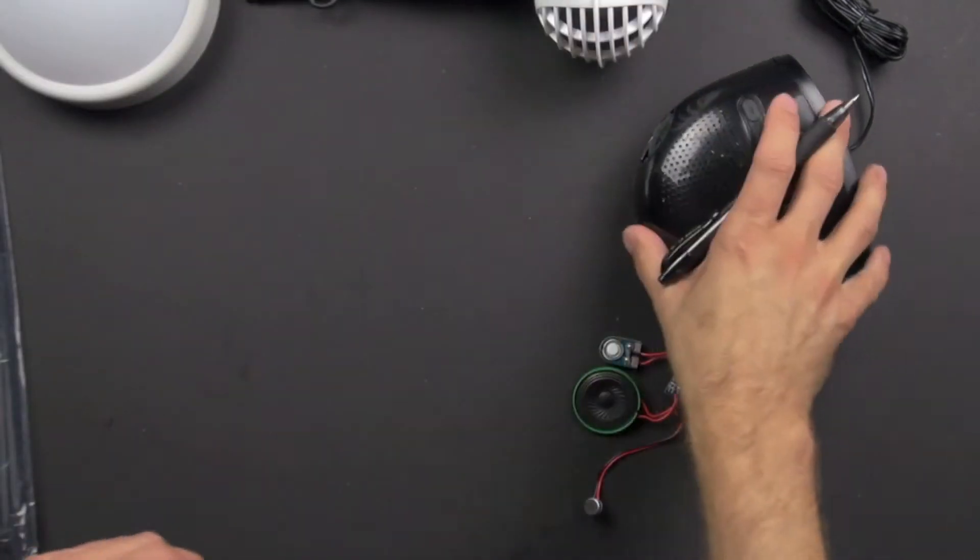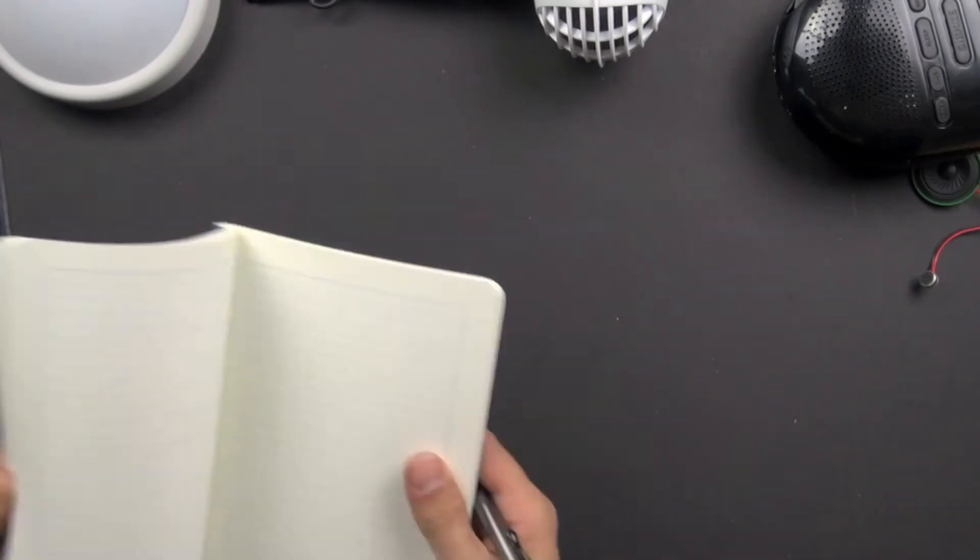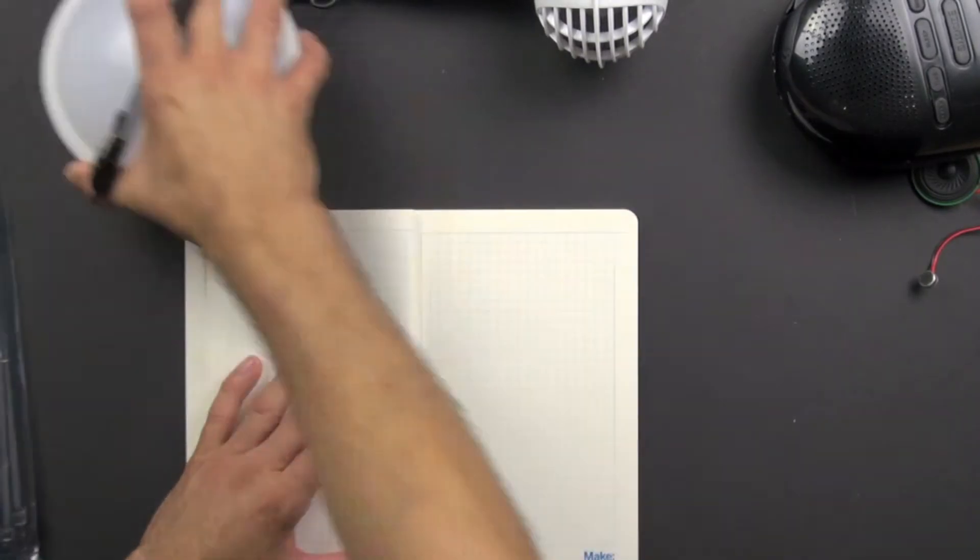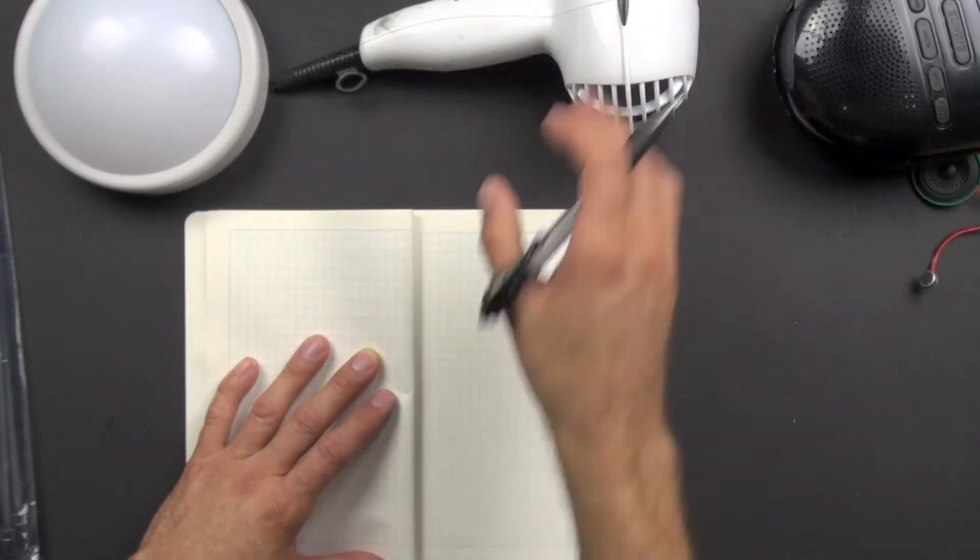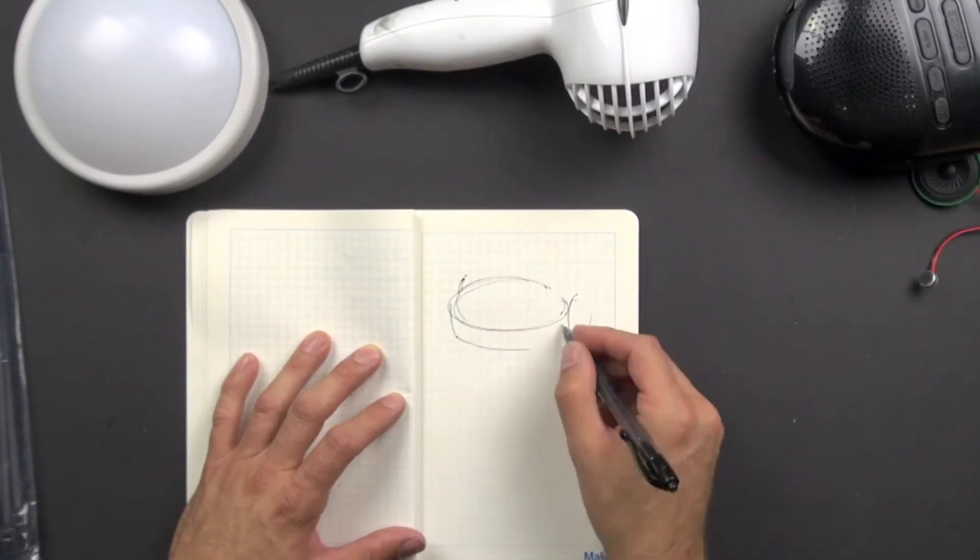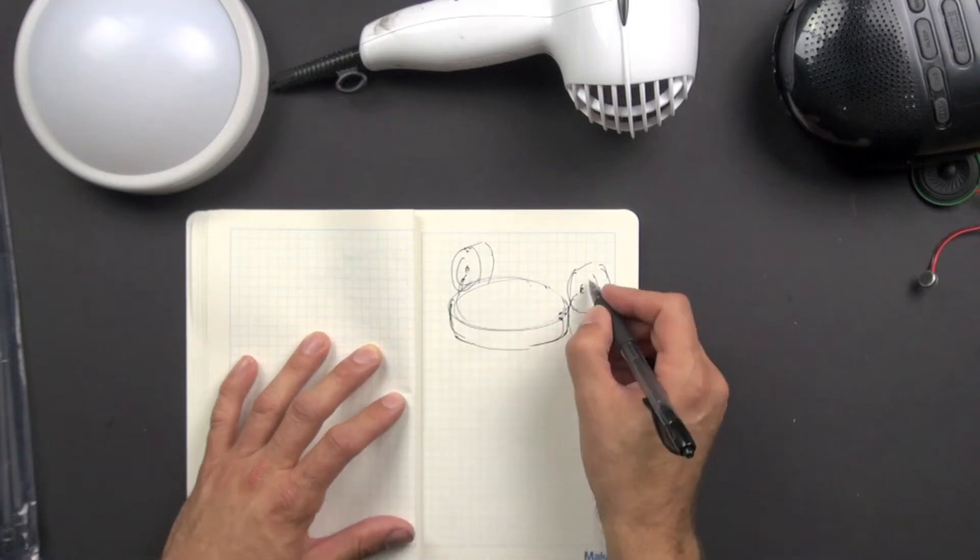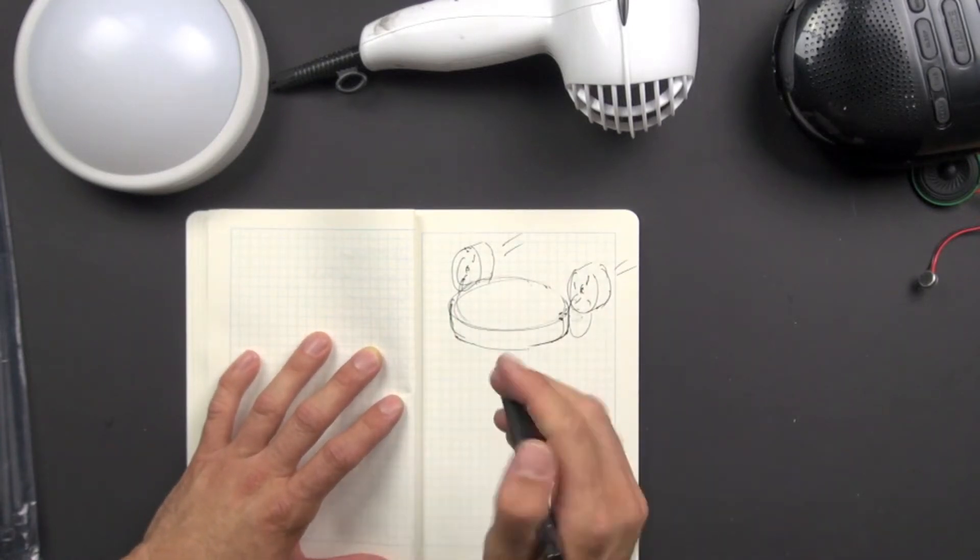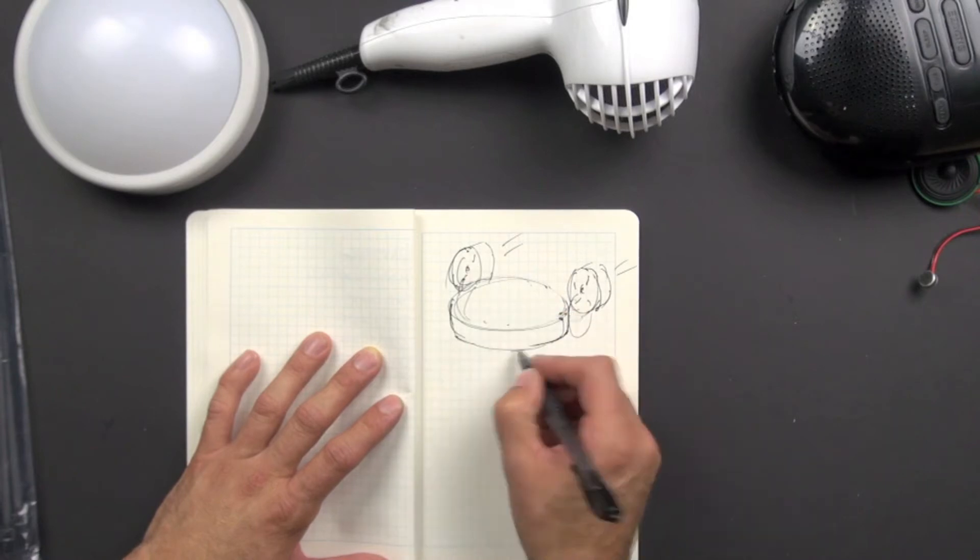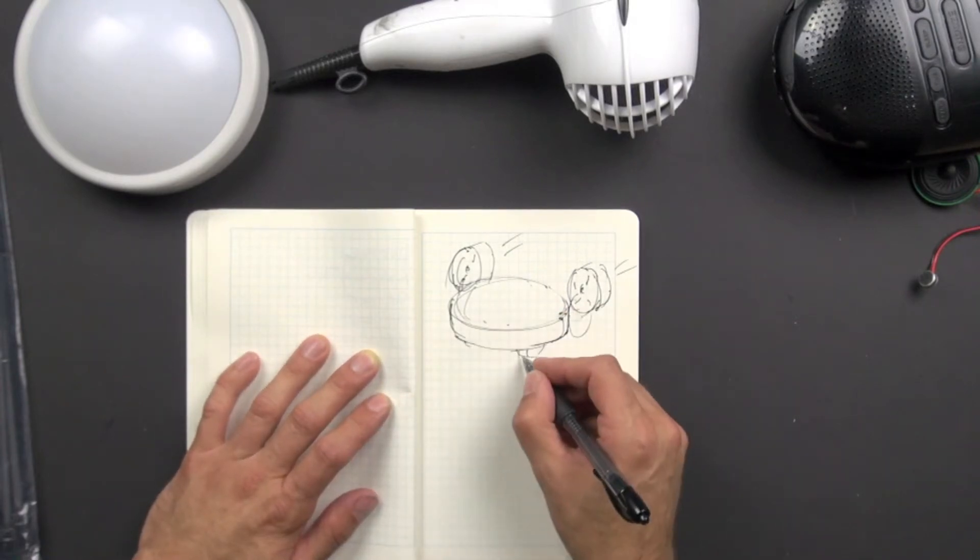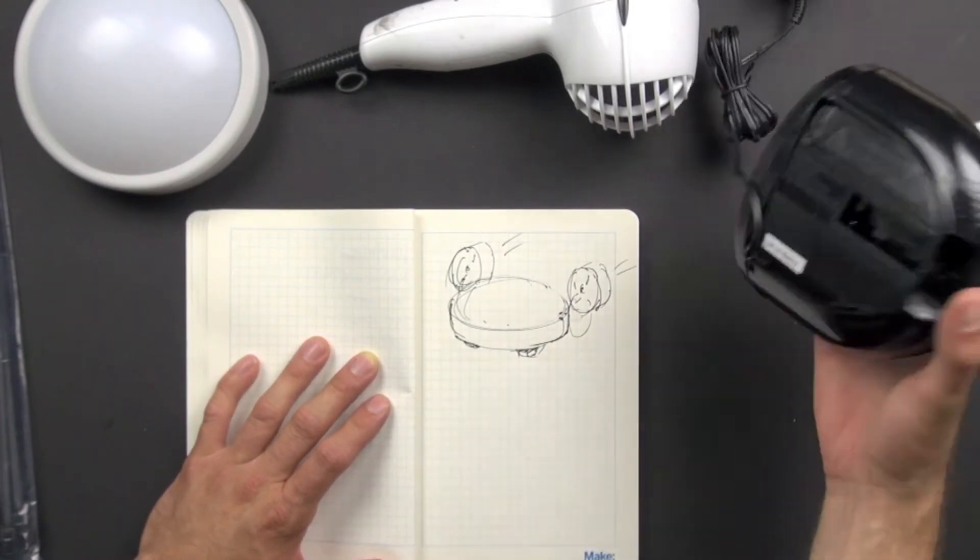We're going to take out our sketch pad and start drawing out different concepts that we might be able to make with these things. The tap light, I like the dimensions of the tap light, so I'm going to try that first. We're going to use the hair dryer as motors, so we know the motors can blow the tap light or potentially move something. So we're sketching a tap light with hair dryer motors on it that can blow it around and make it move.